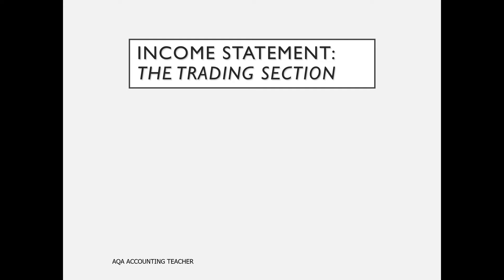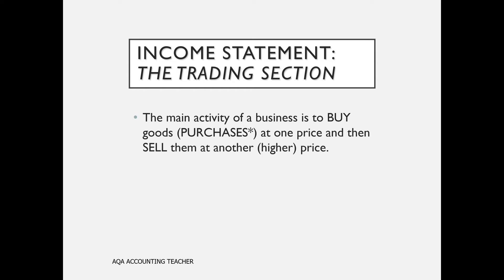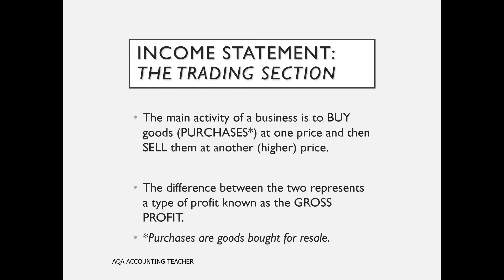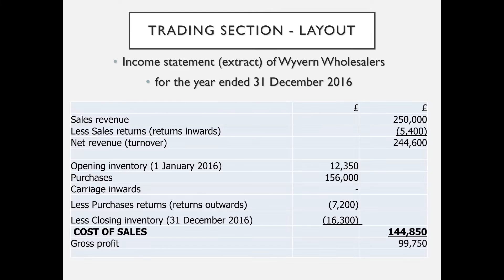At the top of the income statement, we have something called the trading section. This is what we prepare in order to find out the gross profit of the business. The main activity of any business is to buy goods — purchases — at one price and then sell them at a higher price. The difference between these two figures represents the gross profit. Just a reminder that if we're dealing with a service industry, we won't have purchases; we'll just have fees received instead of sales revenue, and there'll be no cost of sales.